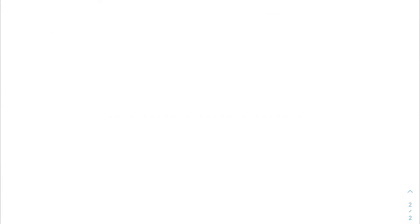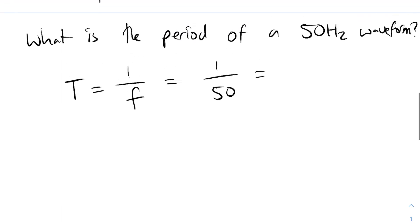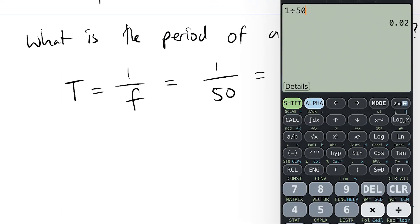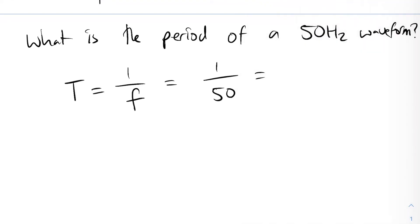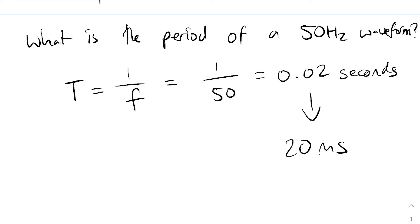Let's do an example: what is the period of a 50 hertz waveform? We want to find the period and we have the frequency, so we do T = 1 over F, which is 1 over 50. Using the calculator, 1 divided by 50 equals 0.02 seconds. Converting that, it's 20 milliseconds. So a 50 hertz waveform has a period of 20 milliseconds.